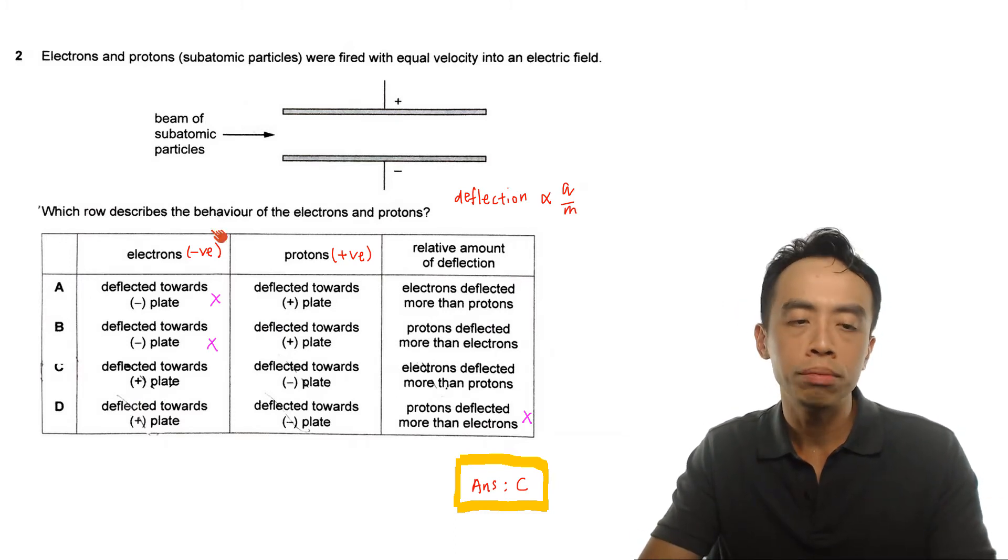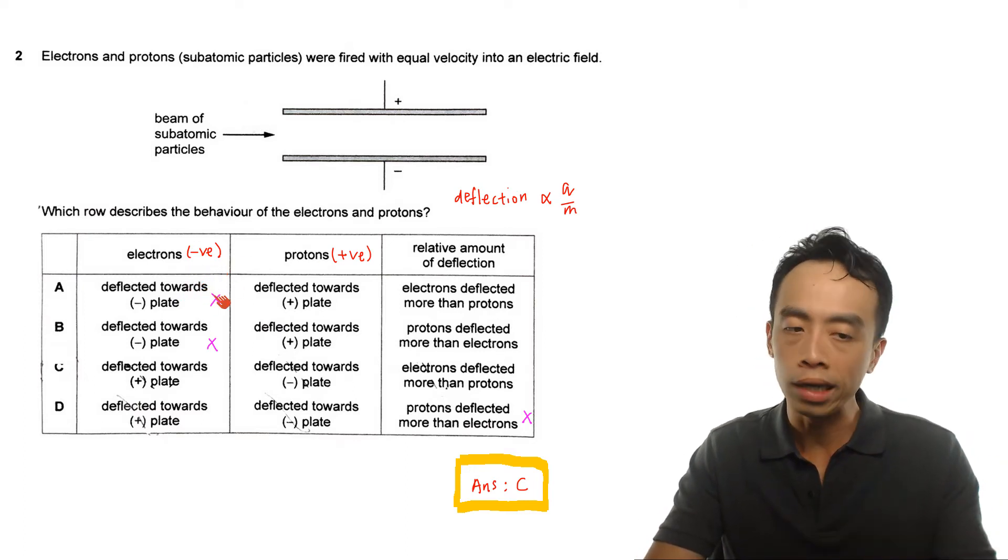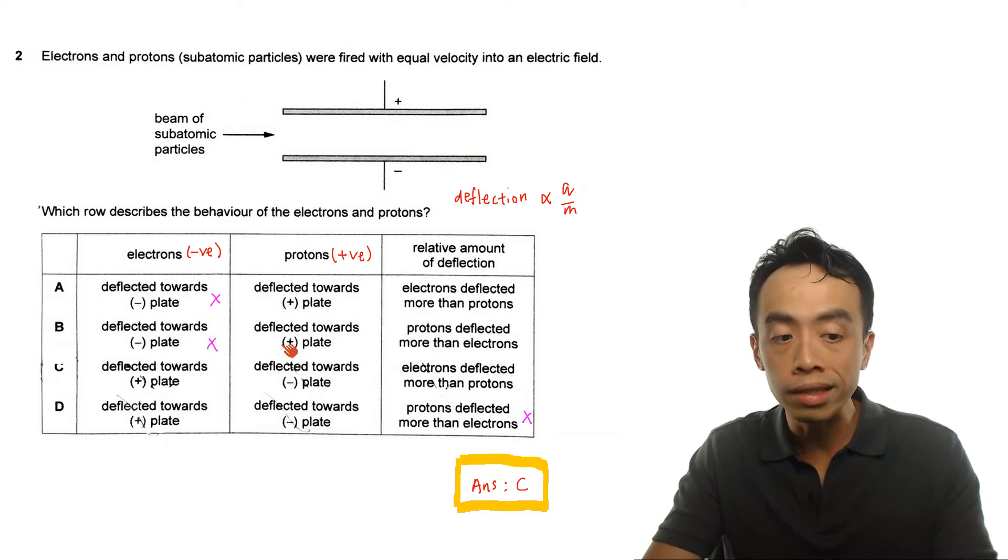So we can very easily deduce because electrons are negatively charged, they will be deflected towards the positive plate. So based on elimination we look at option A which is deflection towards the negative plate, we can eliminate this. B, similarly we can also eliminate this option. So we are only left with options C and D, deflection towards the positive plate.